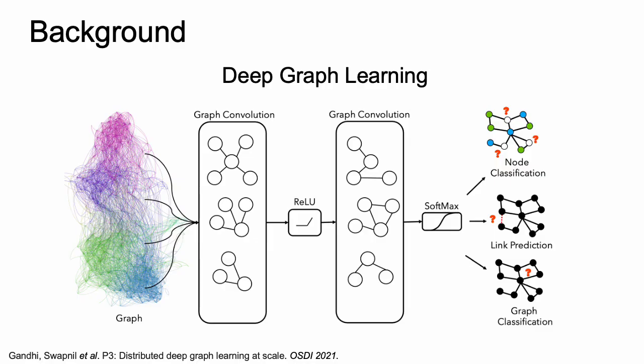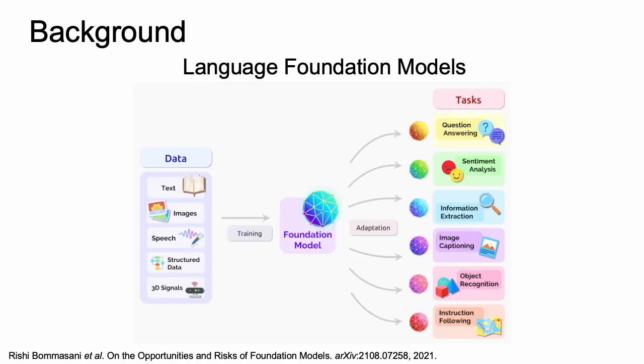The field of graph machine learning has witnessed a paradigm shift from shallow methods to deep learning ones. Meanwhile, thanks to the development of large language models, the concept of foundation models first became a reality in natural language processing. The capabilities of foundation models to generalize and adapt motivate graph machine learning researchers to discuss the potential for developing a new learning paradigm.